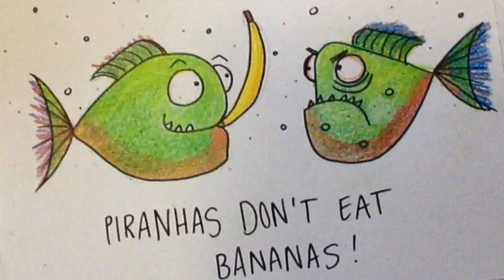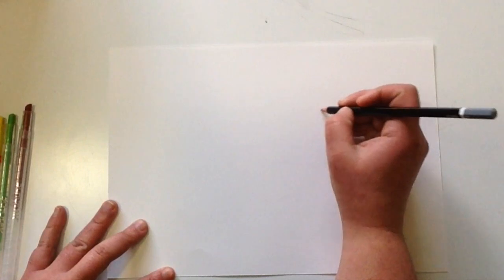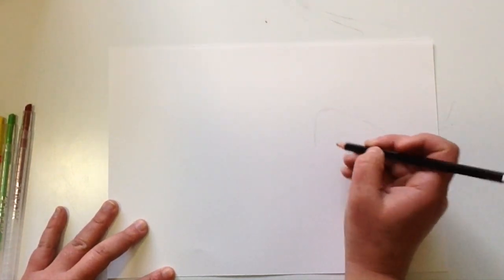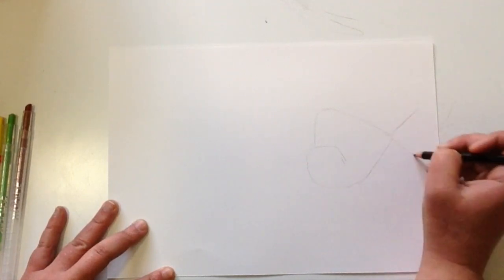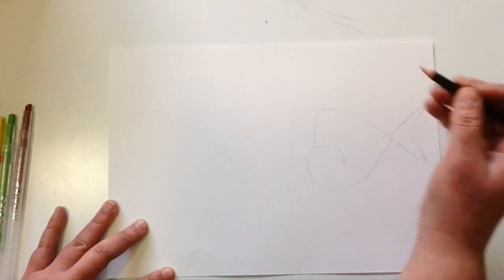Today we're going to draw piranhas, and of course piranhas don't eat bananas. First, using a lead pencil, outline your piranhas. These piranhas are a rounded triangle shape with a triangle tail.